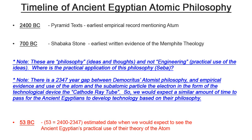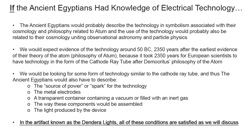We would expect a similar amount of time to transpire between the ancient Egyptians' atomist philosophy and an actual piece of technology based on that philosophy. When we subtract 2,347 years from 2400 BC, we come up with 53 BC. So we expect some form of technology similar to the cathode ray tube to have been developed by the ancient Egyptians around 53 BC. The stipulations for what we're looking for include: the technology described using symbolism associated with their Atum cosmology, evidence of the technology around 50 BC, a form of technology similar to the cathode ray tube, and descriptions of the power source, metal electrode, transparent container with vacuum or inert gas, assembly method, and the light produced.